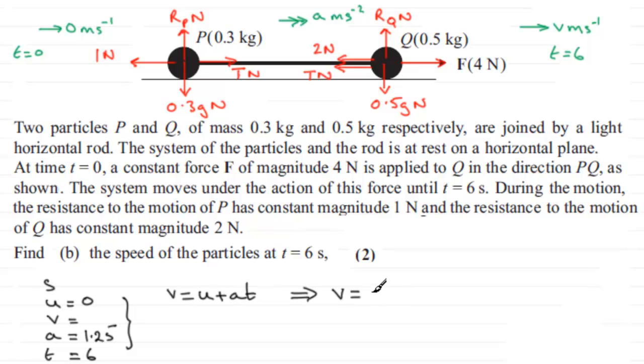And we've got A, which is 1.25 multiplied by the time T, which is six seconds. And if you do that, V turns out to be 7.5 metres per second. Okay?